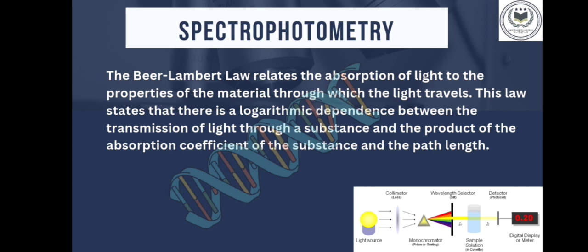Spectrophotometry: DNA concentration can be determined by measuring the absorbance at 260 nanometers in a spectrophotometer using a quartz cuvette. For greatest accuracy, readings should be between 0.1 and 1.0.